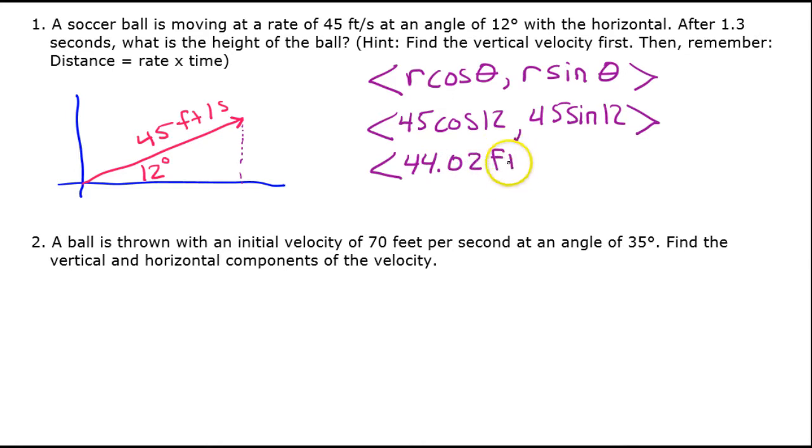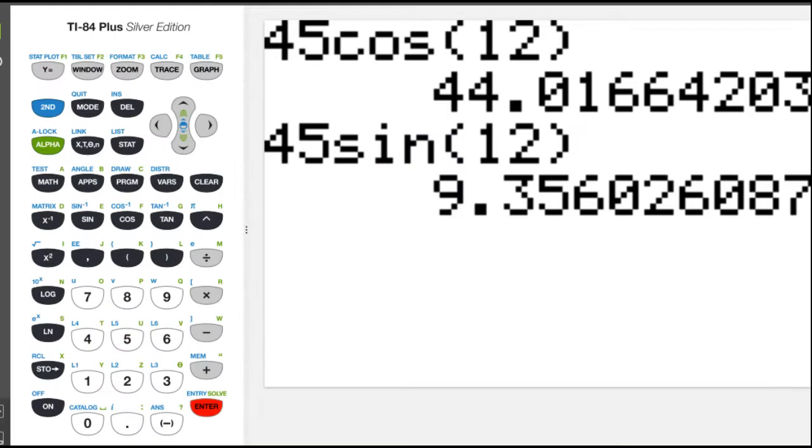So here we have the horizontal and vertical components of the vector. So 44.02 and this is feet per second.